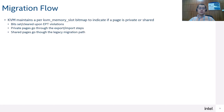For the migration flow, the migration thread needs to distinguish if a page is private or shared, so it can decide to use the legacy page transfer path or the export/import transfer path. KVM maintains a per-memory-slot bitmap indicating if a page is private or shared. This bitmap is set and cleared upon EPT violations. The EPT exit has a special bit that tells KVM whether a GPA is shared or private. If it's a private page, it goes through the TDX migration path. If it's a shared page, it's transferred as normal RAM, like the regular VM migration path.